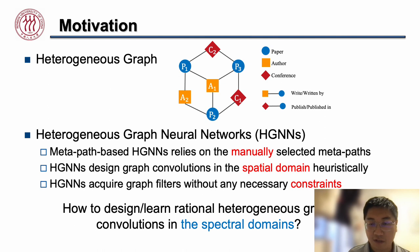Additionally, these methods obtain graph filters without necessary constraints, making them challenging to learn. So there is a natural question: how can we design a principled heterogeneous graph convolution within the spectral domain?